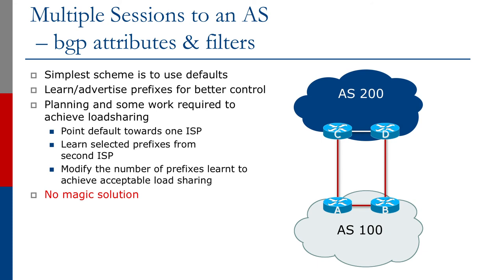The simplest scheme is to use defaults and learn or advertise prefixes for better control. Planning and work is required to achieve good load sharing — pointing default towards one ISP, learning selected prefixes from the second one, and modifying the number of prefixes learned to achieve acceptable load sharing. There's no magic BGP multi-home configuration available on any router. It takes the network operator to understand how to use the BGP attributes and manage aggregates and sub-prefixes to achieve the load sharing desired for your network.